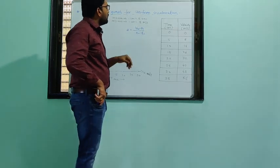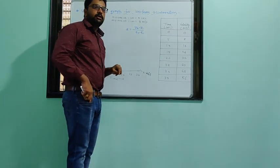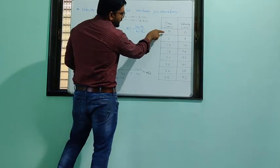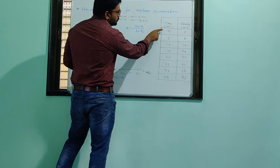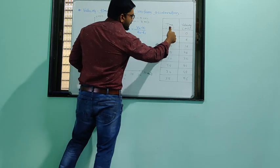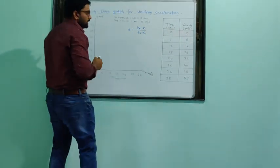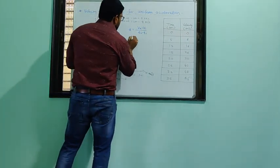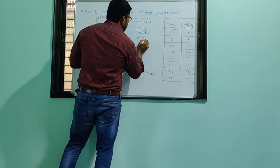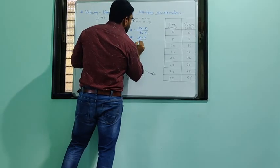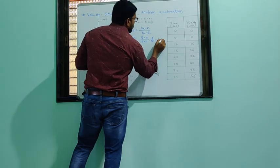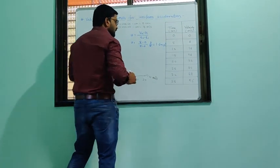You know the formula of acceleration: a = (V2 − V1) / (T2 − T1). For the first 5 seconds, from 0 to 5: acceleration = (8 − 0) / (5 − 0) = 8/5 = 1.6 m/s².